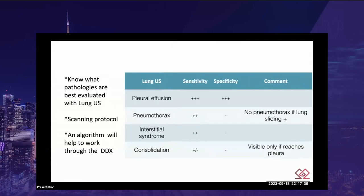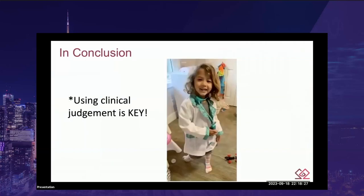Key takeaways: pleural effusions are what lung ultrasound was made for — super sensitive and specific. For pneumothorax, lung ultrasound is very sensitive to rule it out, but harder to rule in — if you don't see lung sliding, go through the entire pneumothorax algorithm. For interstitial syndrome, compare B-line morphologies to understand the disease process. For consolidation, the process must reach the pleura to be visible. Always have a scanning protocol and use an algorithm to work through your differential. Ultrasound is a supplement to clinical judgment — please use your clinical judgment.